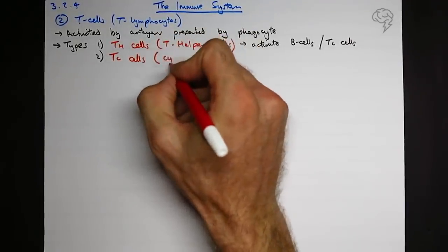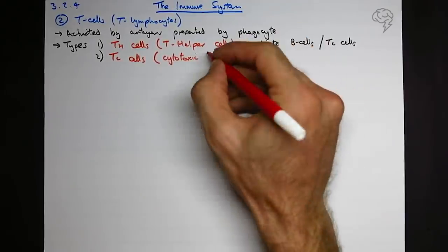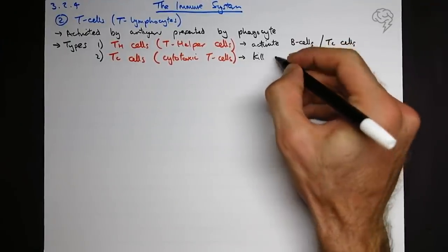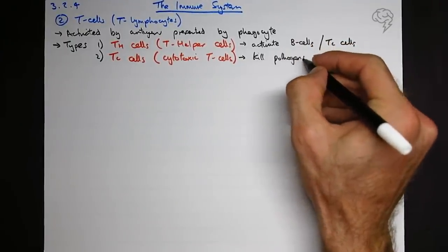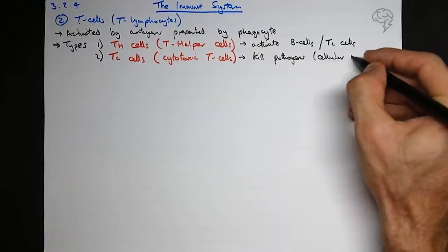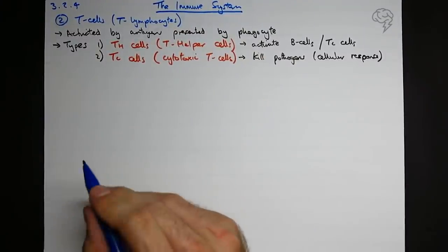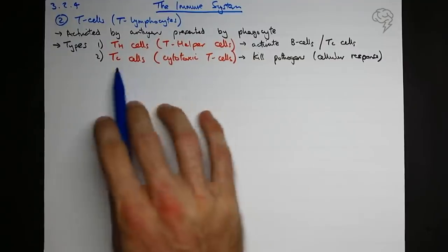These are called cytotoxic TC cells. What do these do? Well, these are cellular response. They kill foreign pathogens, they kill pathogens, which is the cellular response. That's basically it. We don't need to know how they kill them, we just need to know that these are the cellular response and they kill the pathogens directly.